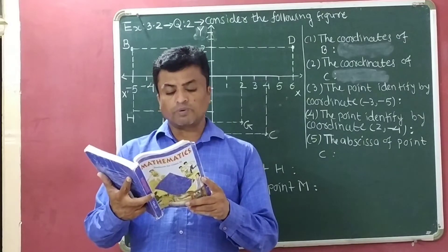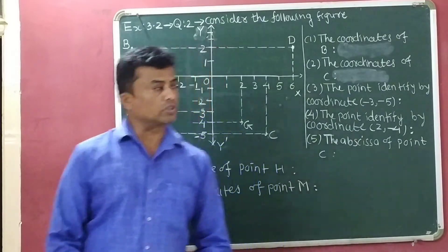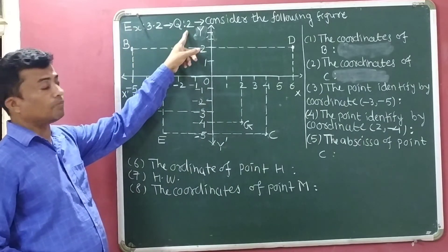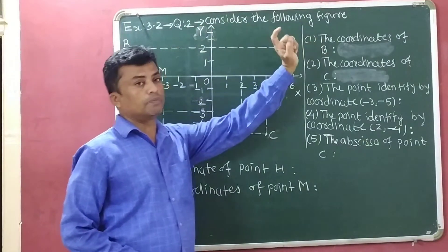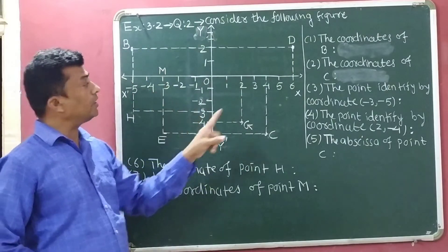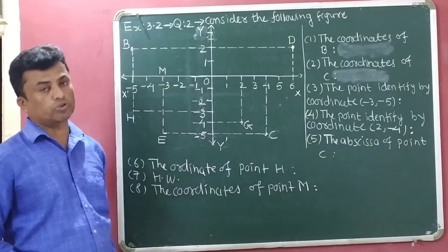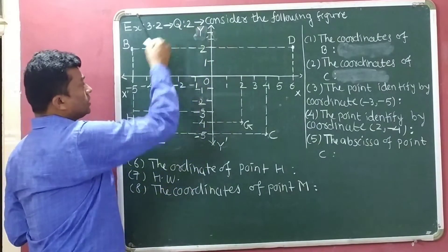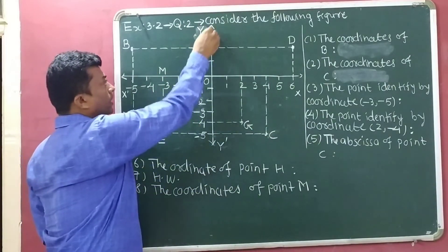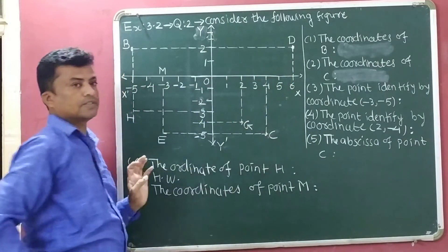Now, question number 2 of Exercise 3.2. Exercise 3.2, question number 2: Consider the following figure. This figure is given to us and we have to identify answers to the given questions. In the given figure, this is the y-axis and this is the x-axis.